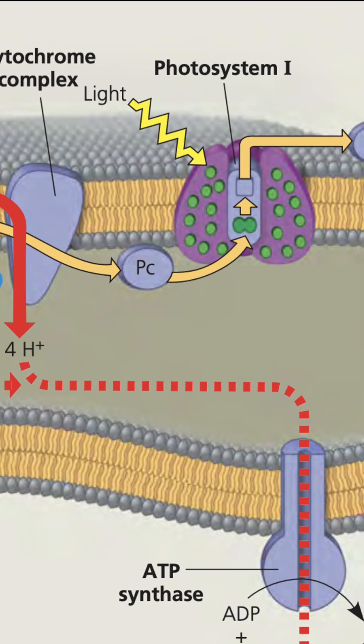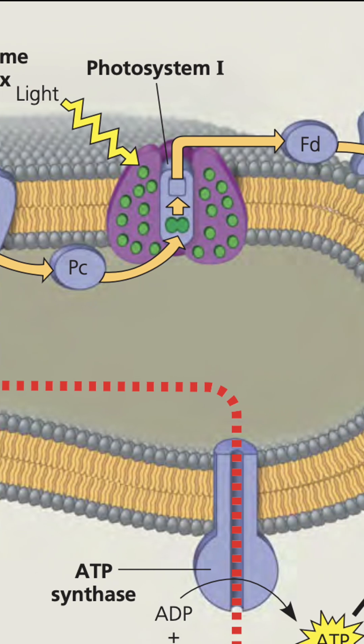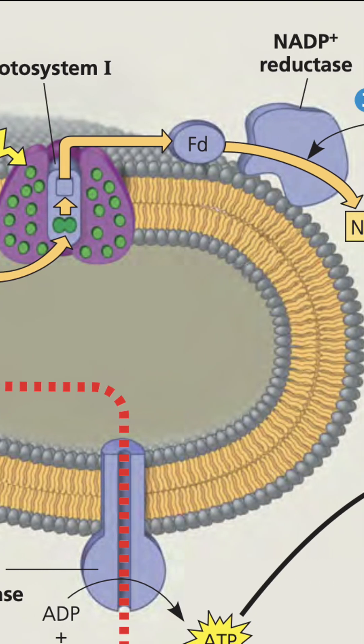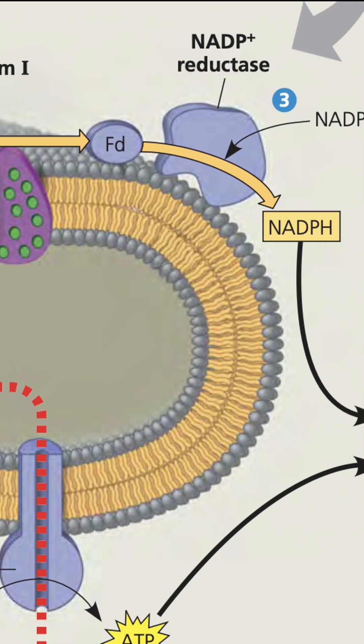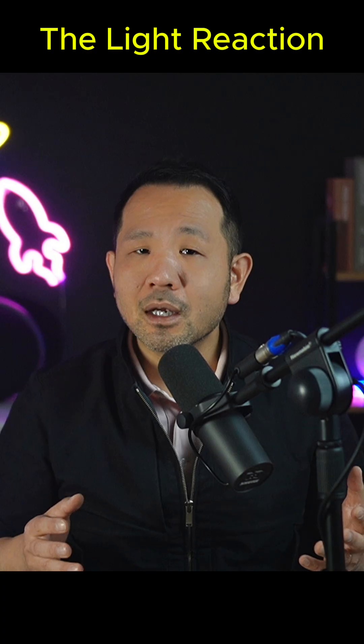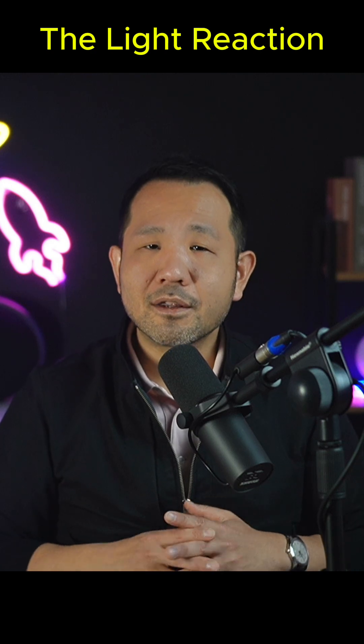But the electron's job is not quite done. When it arrives in photosystem 1, it becomes re-energized before being packaged up and shipped away in an electron carrier called NADPH for the Calvin cycle.